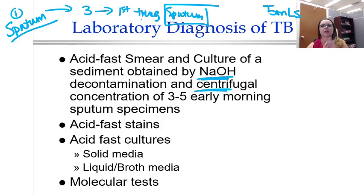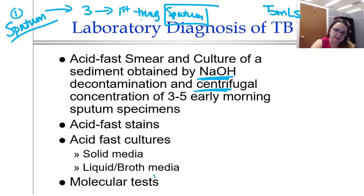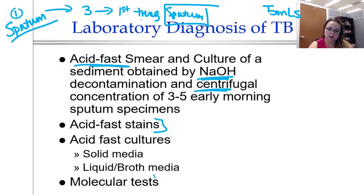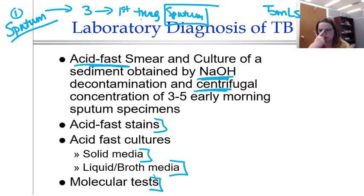So that's just collecting the specimen. Now what are we going to do with it? We have a couple of options: we can do an acid-fast smear — there are a couple of acid-fast stains — we can also do cultures, either solid media or liquid broth, and we can also do molecular tests. We're going to go through each one of these one by one.